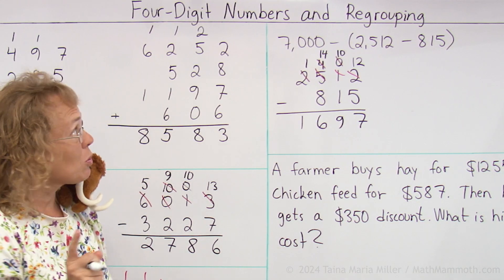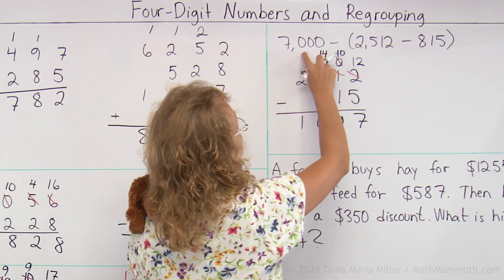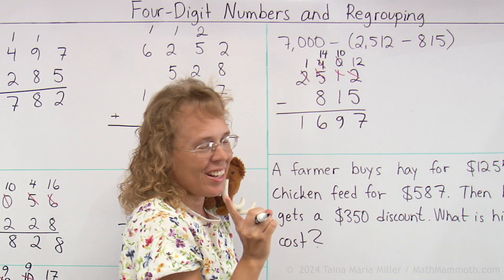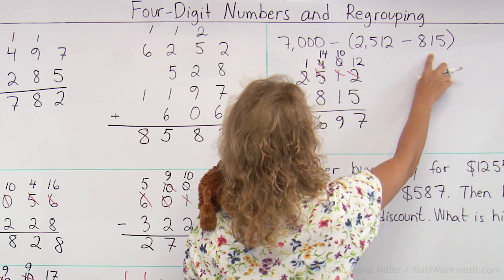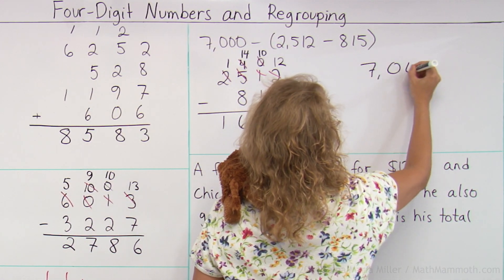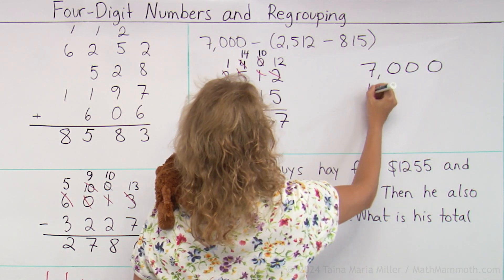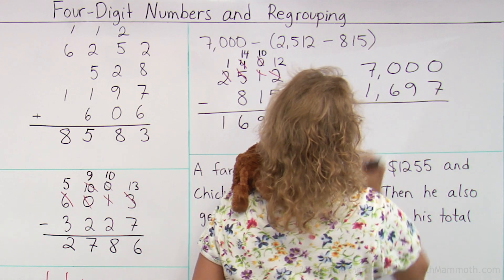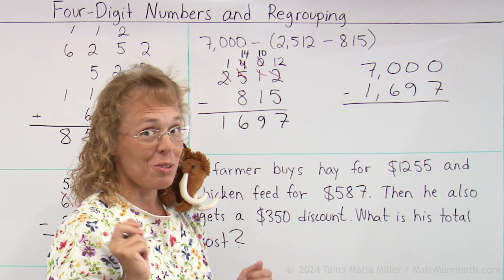And now we do the second subtraction. See, seven thousand minus that. We have only done this part, so don't stop there. We've done that and we've found the answer for that. Now we go seven thousand minus one thousand six hundred ninety-seven. Lots of zeros, once again.